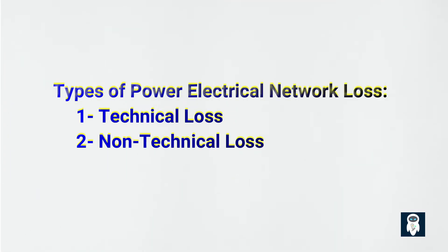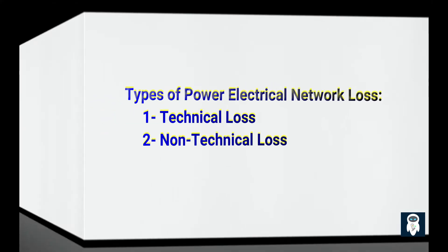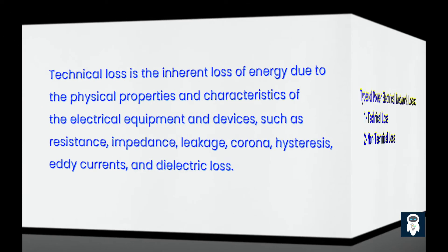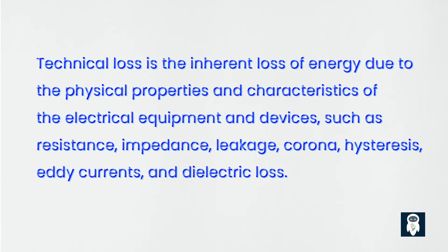There are two main types of power electrical network loss: technical loss and non-technical loss. Technical loss is the inherent loss of energy due to the physical properties and characteristics of the electrical equipment and devices such as resistance, impedance, leakage, corona, hysteresis, eddy currents, and dielectric loss.